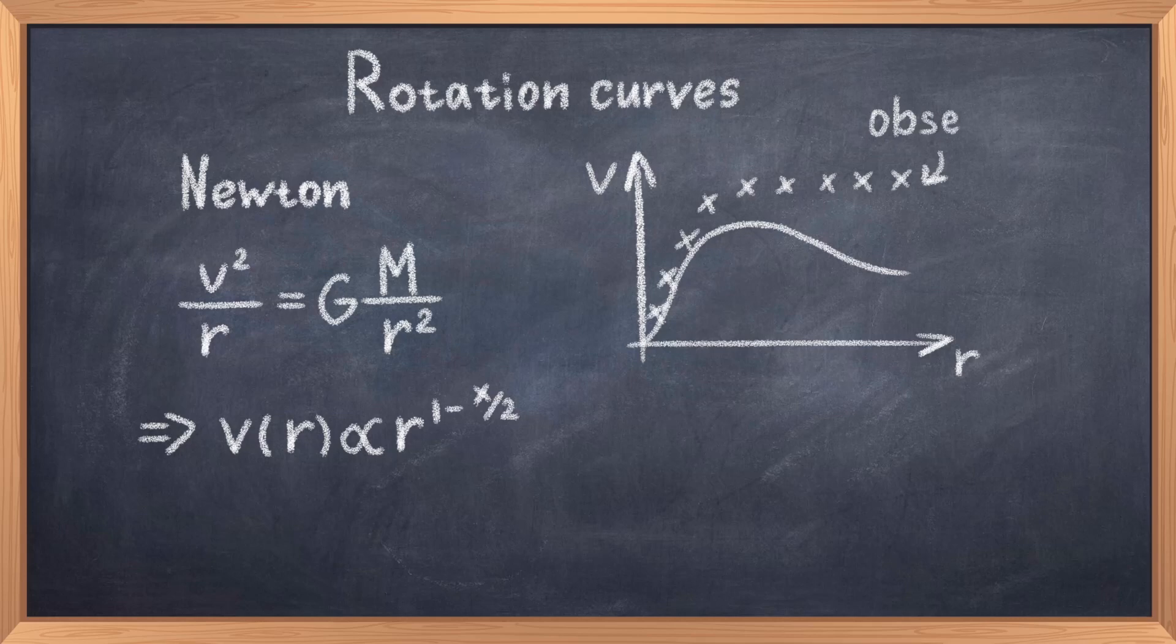From this we find that the velocity as a function of the radius from the center is proportional to v as a function of r is proportional to r to the power of 1 minus x divided by 2, where x is some constant. If we use this rule and compare it to observed rotation curves, we find that the velocity is simply too high.